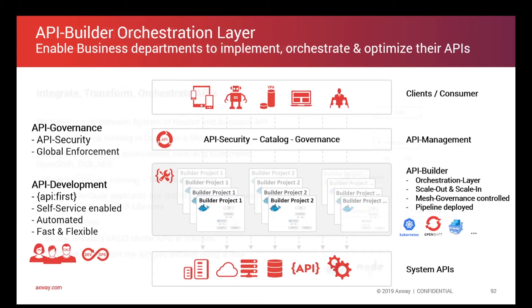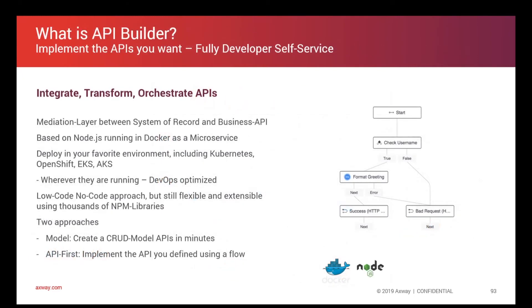In summary, API Builder is used to integrate, transform, and orchestrate APIs. It becomes a mediation layer between system-of-record APIs and business APIs, which may have been designed in an API design tool. It is based on Node.js, making it a Docker container that runs as a microservice and can scale in and out.